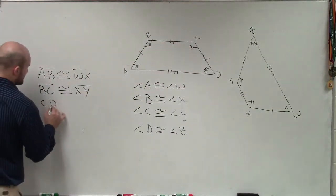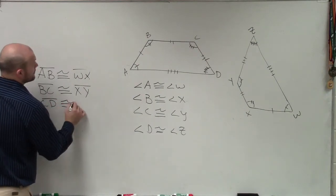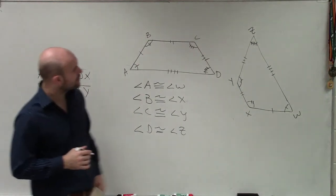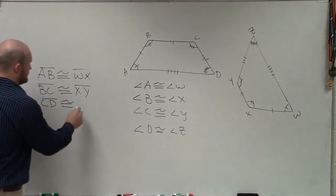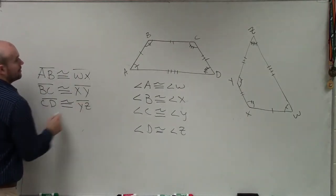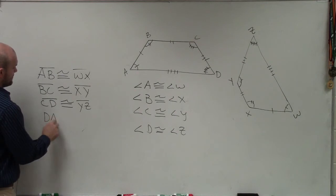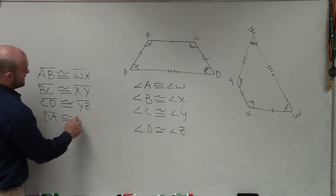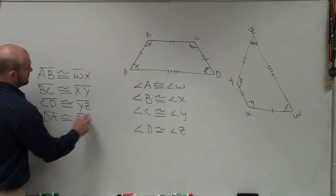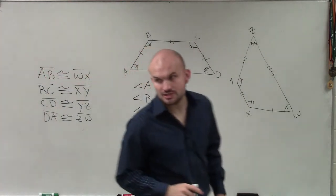The next one is I'll go to CD. CD is congruent to YZ. And therefore, the last one is DA is congruent to ZW. Anybody have any questions on that?